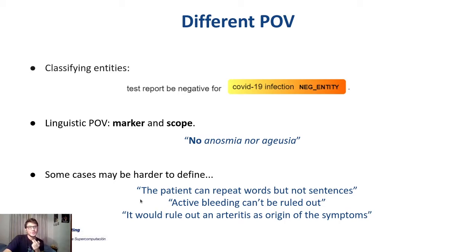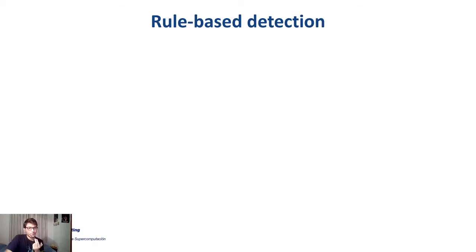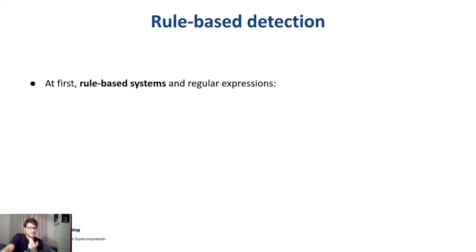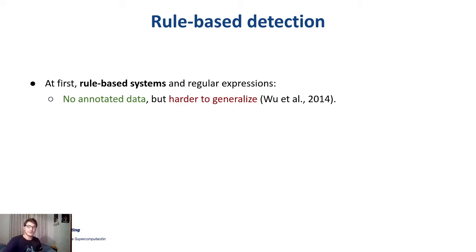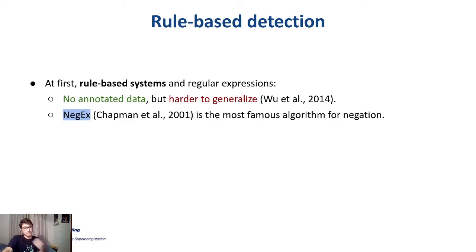How do we treat these phenomena from a computational point of view? The first type of system that appeared were rule-based systems, which used a lot of rules and regular expressions. They have the advantage that you don't need annotated data to train them, but they are harder to generalize to different types of texts, and you need linguists to define rules. The most famous algorithm for negation is called NegEx.